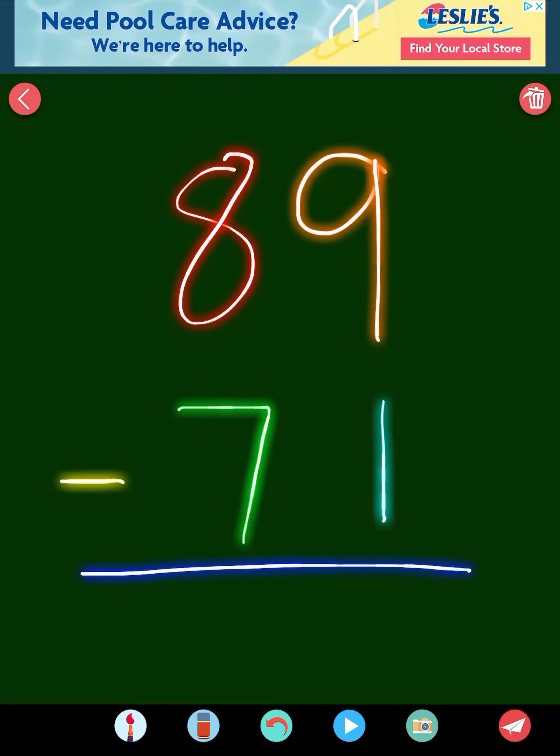Okay, here is the answer. Let's see if you got it right. 9 minus 1 is 8. And 8 minus 7 is 1. So the answer is 18. Very good. Let's do two more.